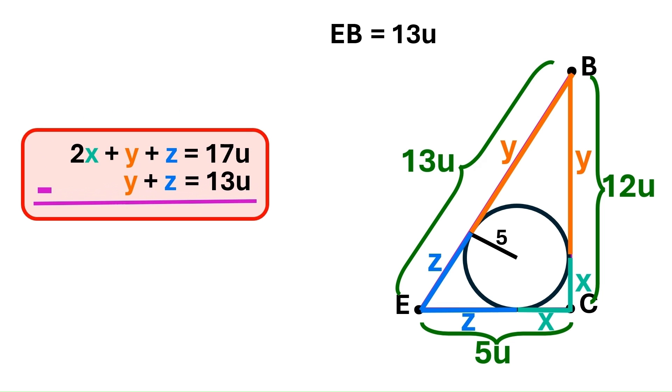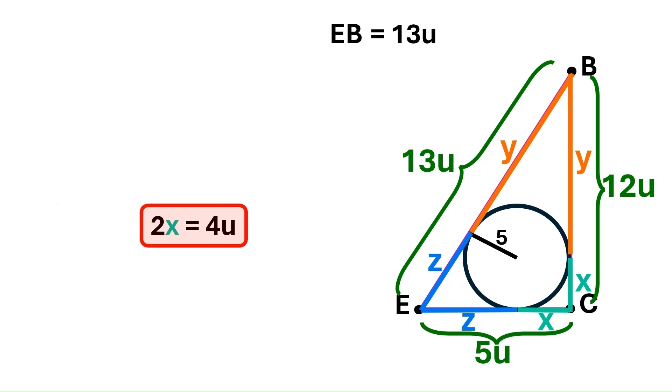And we'll subtract from it this third equation. These guys just cancel out. This 2X goes down like this. And 17U minus 13U is 4U. We end up with this, which simplifies to X equals 2U.